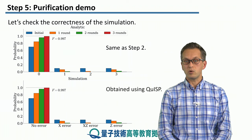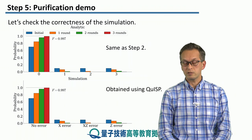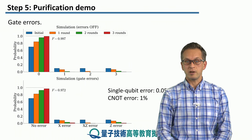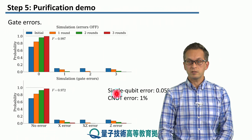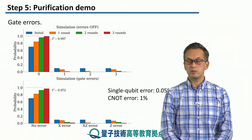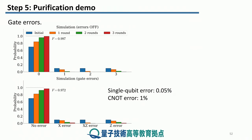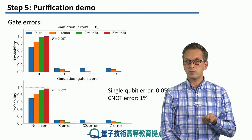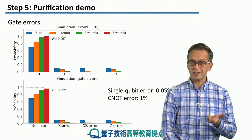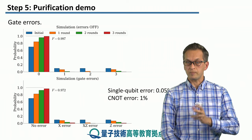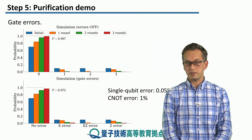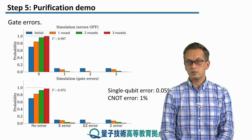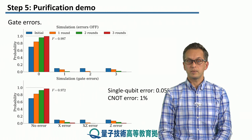So we can conclude that the simulation is correct and we can rely on the results coming in the next steps. Now let's include the gate errors. For single qubit errors, we set the probability of error to be 0.05%. Single qubit gates are used to flip the basis of measurements — for X purification we measure in the Z basis, for Z purification we measure in the X basis, and we can use a Hadamard gate to change the basis and always measure in the Z basis. CNOT gates are two-qubit gates and they're always more noisy, so we set the probability of error to be 1%.